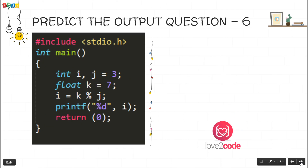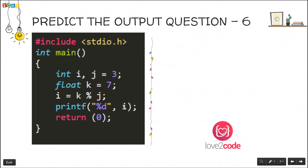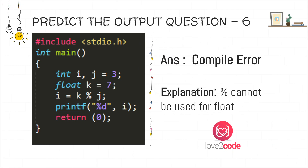The sixth question declares i and j as integer variables with j assigned to 3, and a float k equal to 7. Then i is assigned k modulus j. We then try to print i. The expected output is a compilation error, since the modulus operator cannot be applied to a float.